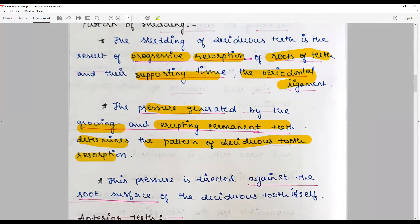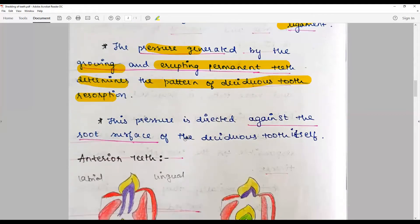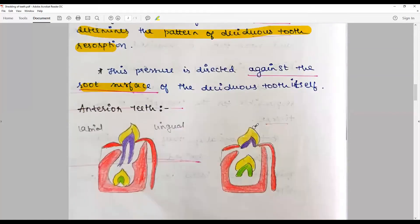I repeat: the pressure generated by the growing and erupting permanent teeth is the single most important factor that determines the pattern of deciduous tooth resorption. The pressure is usually directed against the root surface of the deciduous tooth itself.